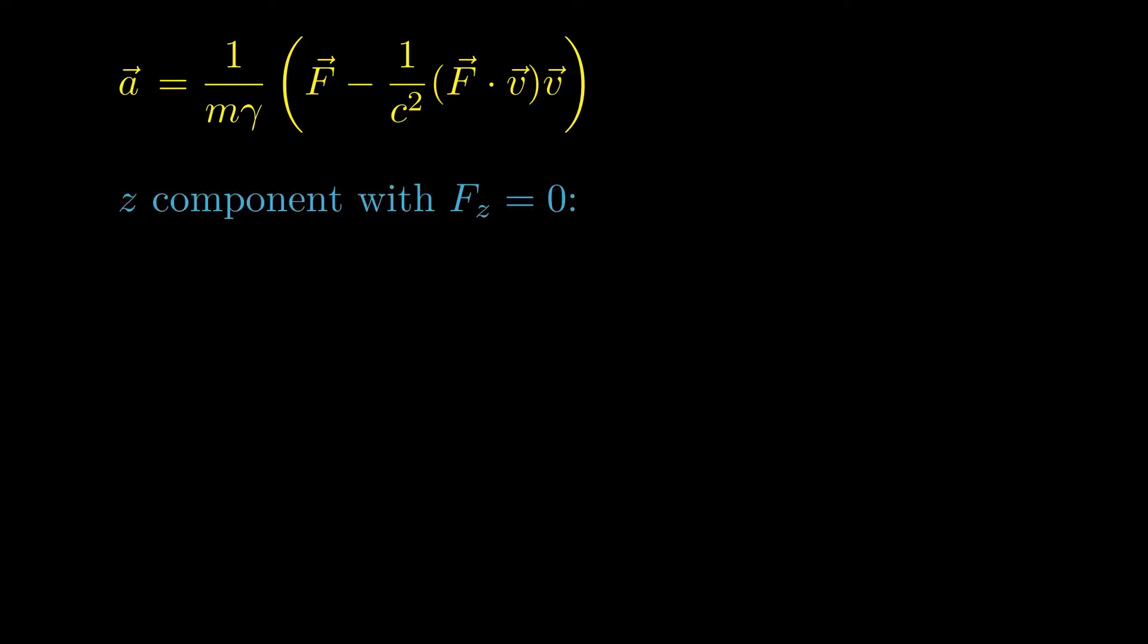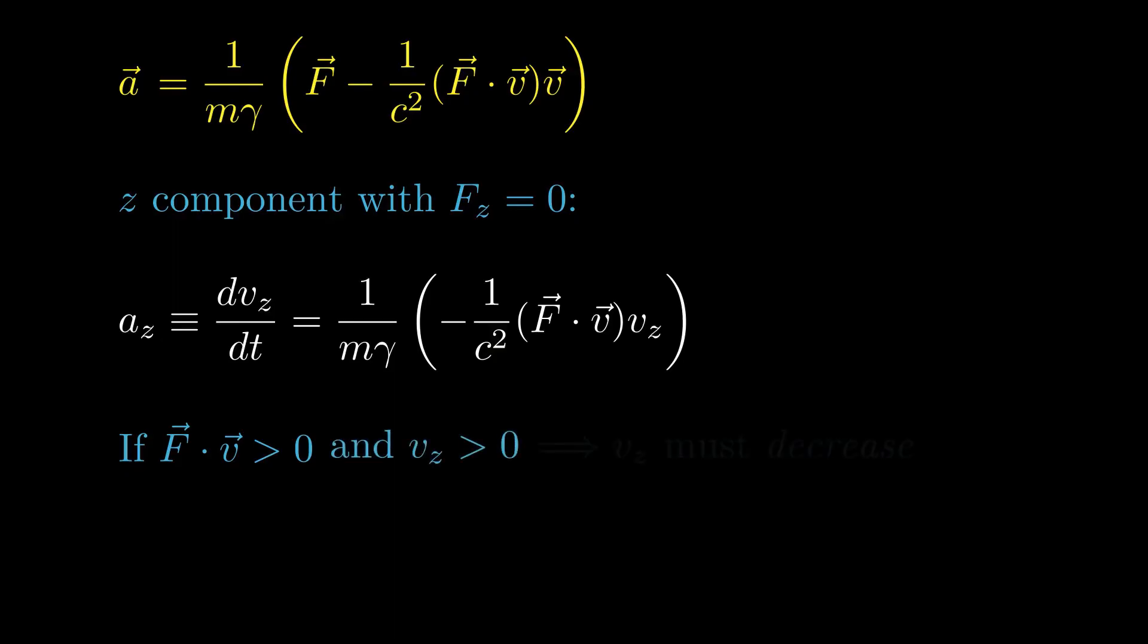Let's write out the Z component of our equation for the acceleration, and in the process, set the Z component of force equal to zero. Remember, by setting F sub Z equal to zero, we ensure that there is no Z component to the back reaction on the force-producing mechanism. This is the result, where F dot V equals F sub X times V sub X plus F sub Y times V sub Y. If the forces in the X and Y directions do positive work, so that F dot V is greater than zero, and the ions are moving to the right, so that V sub Z is greater than zero, then the Z component of the velocity must decrease in time.